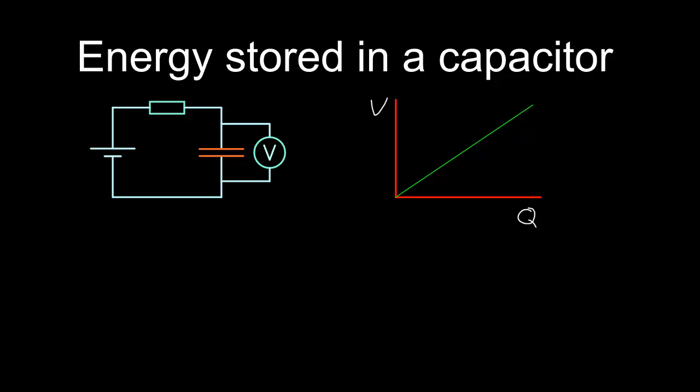In this video, we're going to look at how we can calculate the energy that's stored on a capacitor. So here we've got a capacitor, and it's been charged up, so it's got a potential difference of V over it, and it's got charge Q stored on its plate.